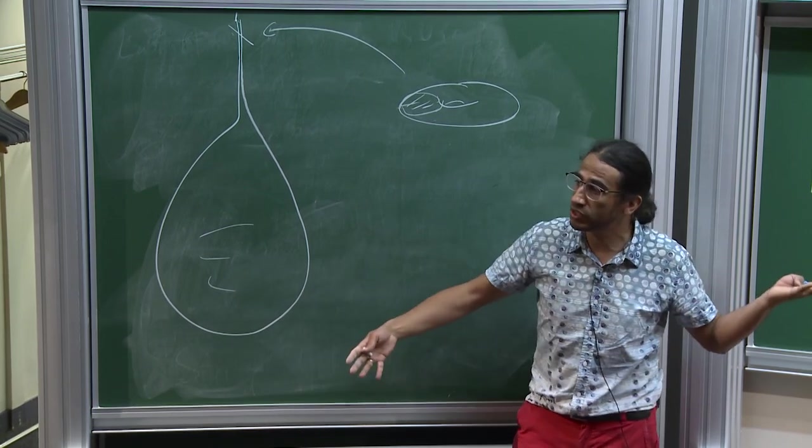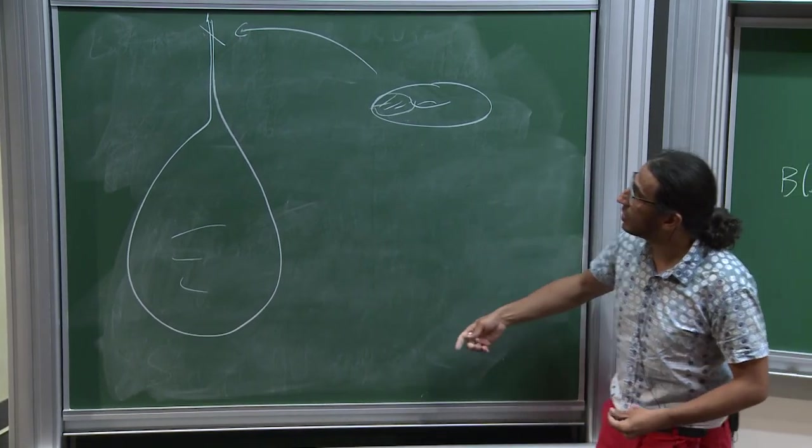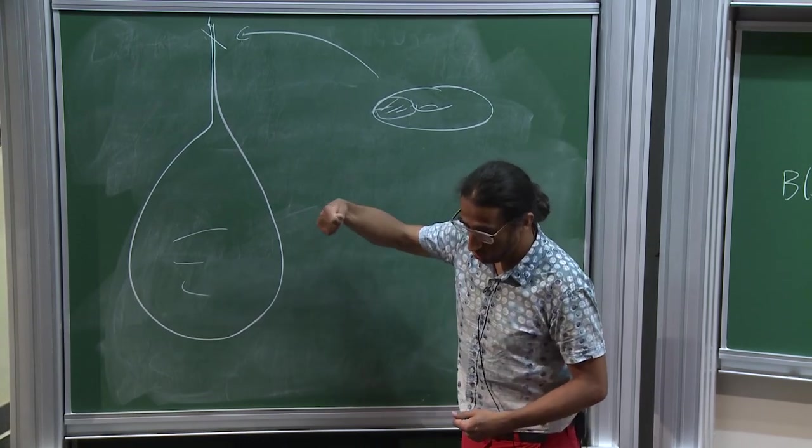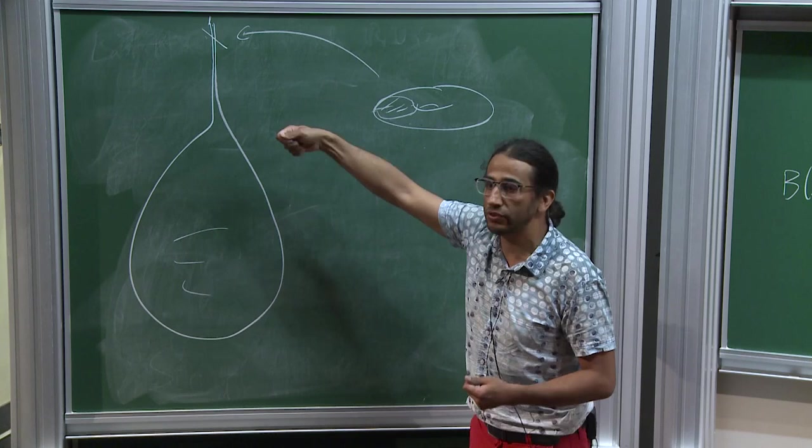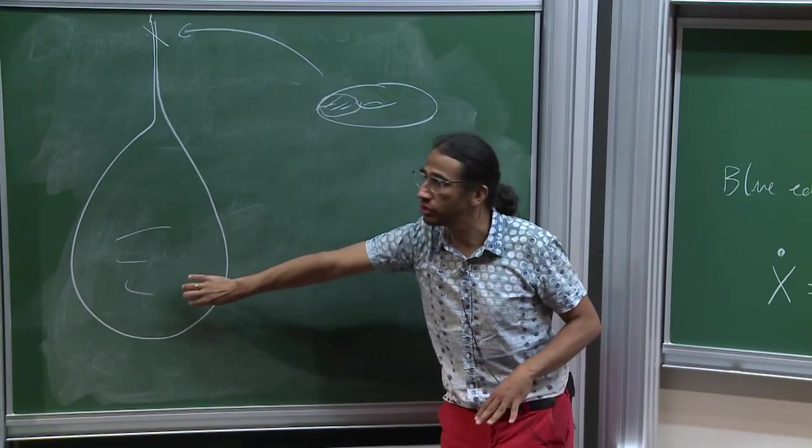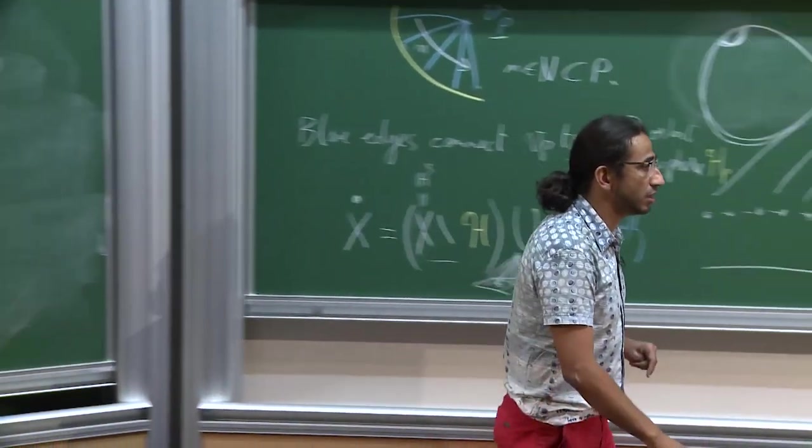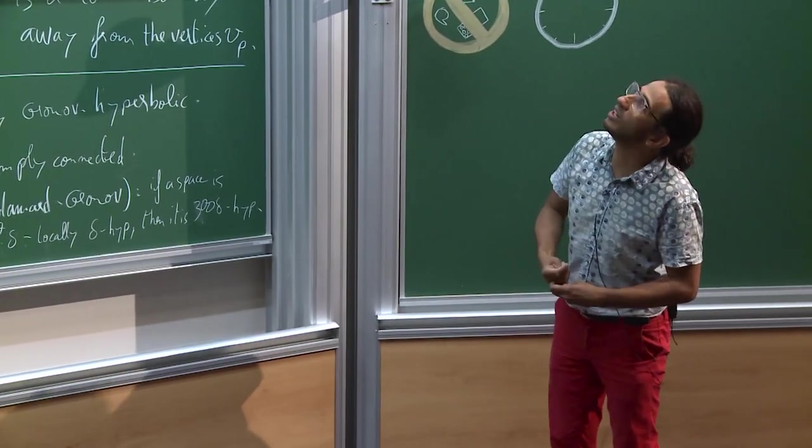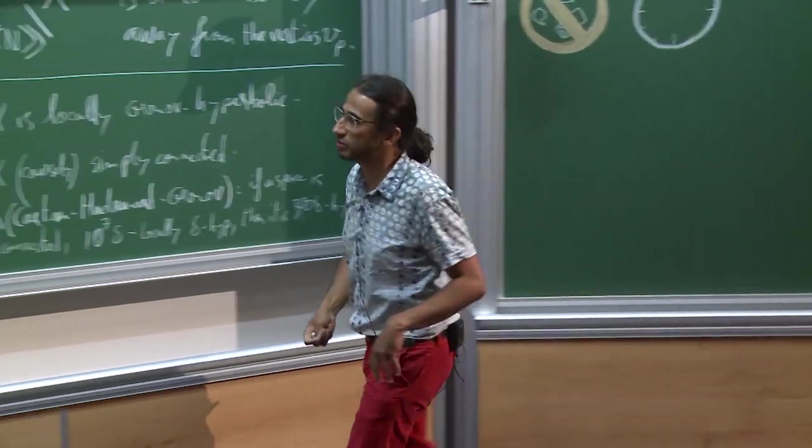And that's part of this story, that the more complicated the Dehn filling you're doing, the less you're modifying the metric on the hyperbolic manifold. And some kind of that statement is also true in relatively hyperbolic groups.